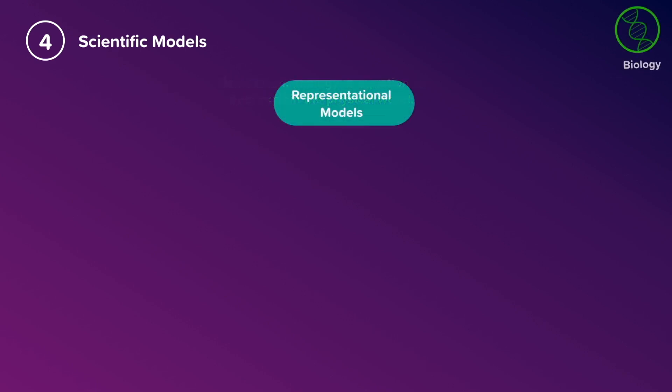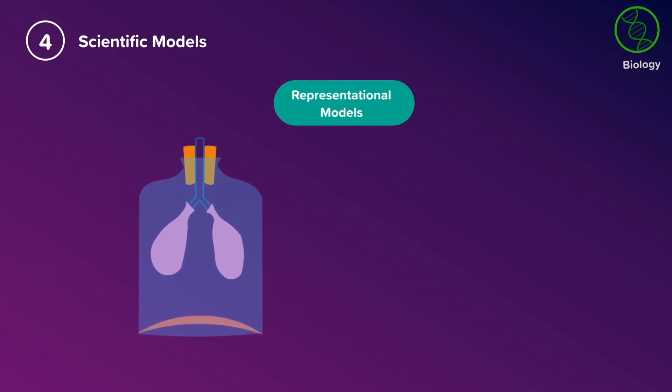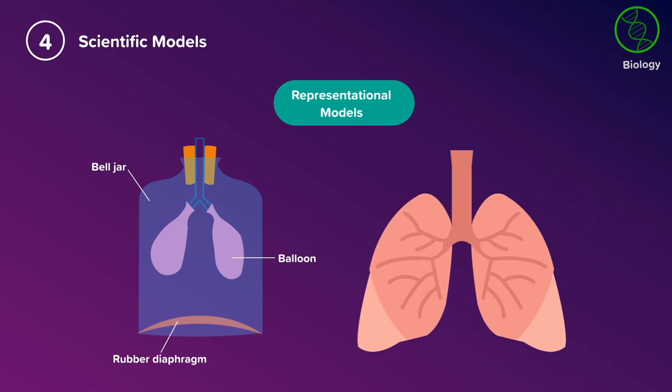A representational model is using familiar objects to explain reality. For example, this bell jar model uses a glass jar, balloons and a rubber sheet to model the action of the diaphragm, changing the volume and pressure in the thorax to ventilate the lungs. It helps us understand what's happening in the body and how different parts work together.